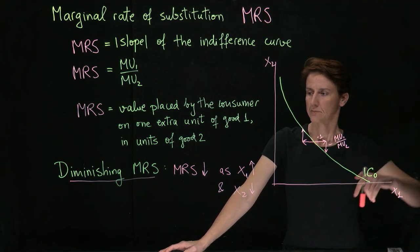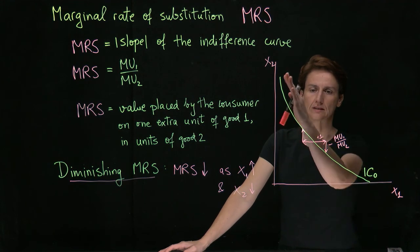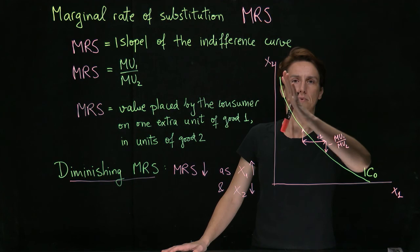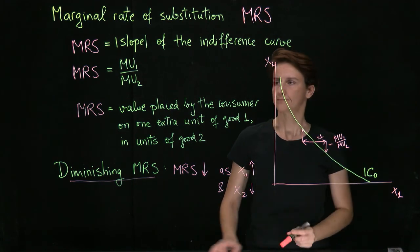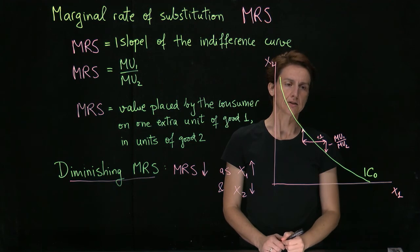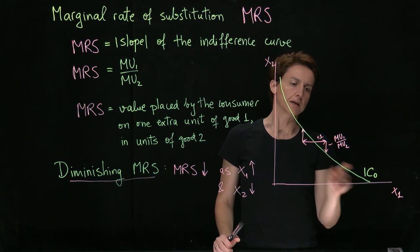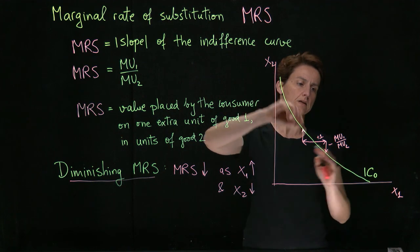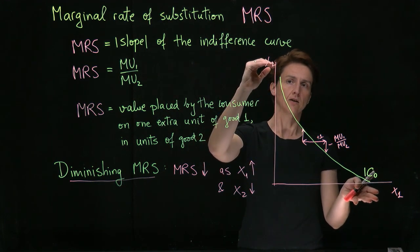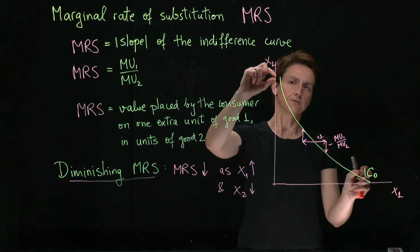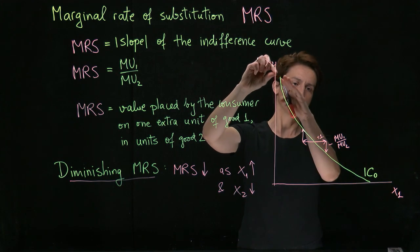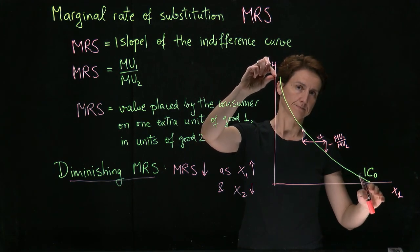In the graph, diminishing MRS means that the slope will get flatter as we move along the indifference curve in this direction. In other words, it will be bowed towards the origin. And that has a further interesting implication. And that is, if we compare two baskets, where either we have a lot of good 1 and very little of good 2, or the other way around, if we are indifferent between those two baskets, we will strictly prefer an average basket.